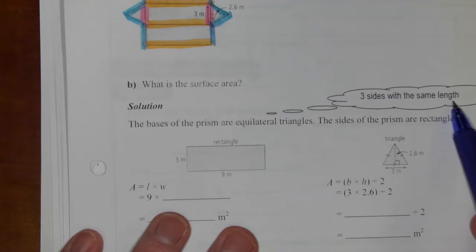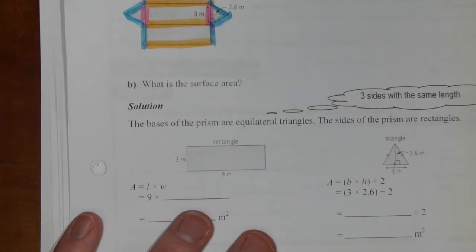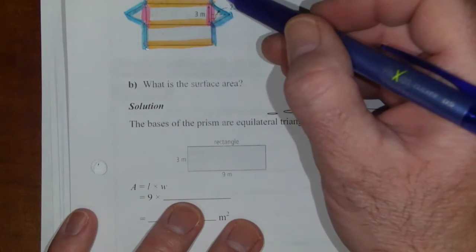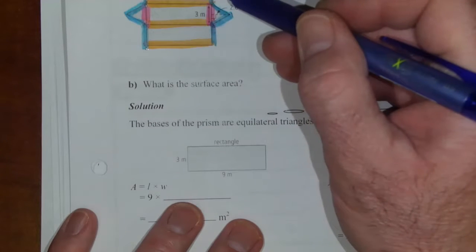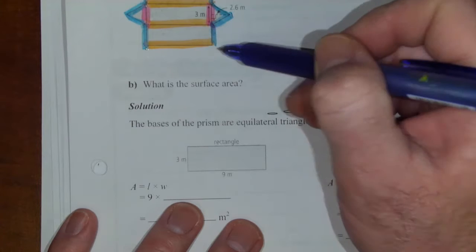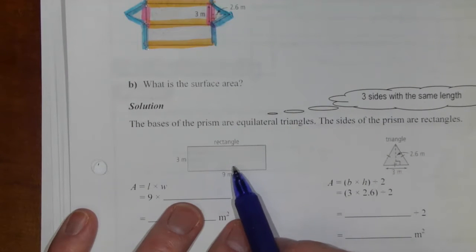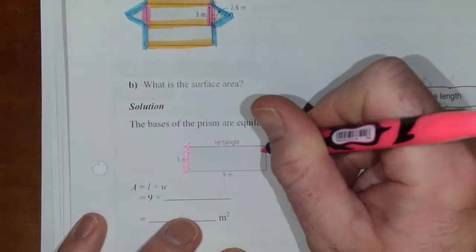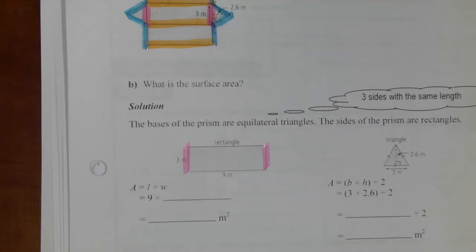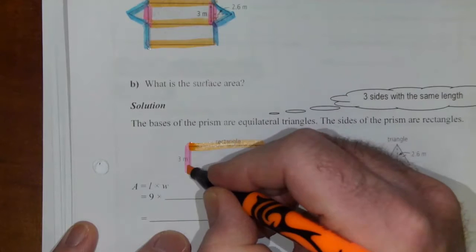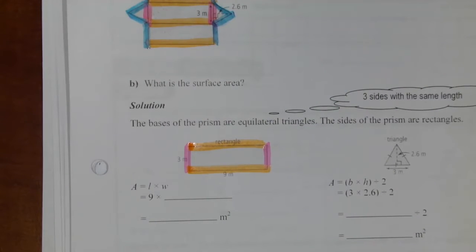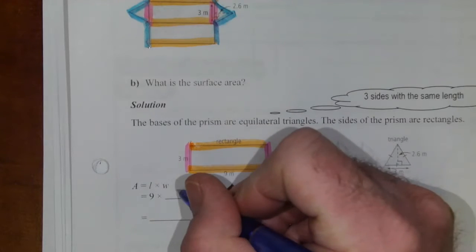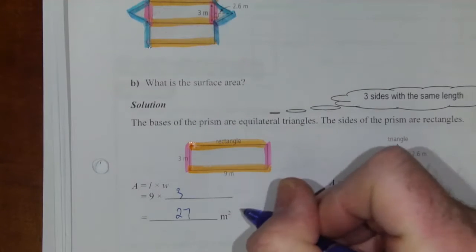Equilateral triangles, all three sides have the same length. So we have three rectangles, and they're all 9 long by 3 wide. So we have three of these rectangles that are exactly the same. The area of this rectangle, length times width, is 9 times 3, and 9 times 3 is 27 meters squared.